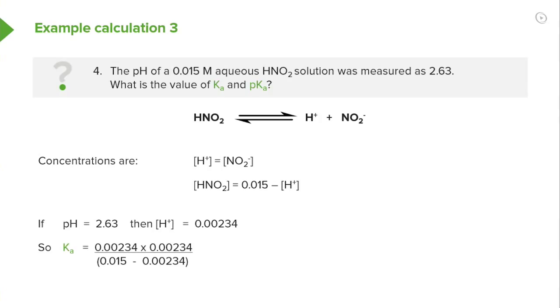If the pH that we are measuring of this solution results in a concentration as we can see here of 0.00234 molar, it enables us to substitute those values into the equation to determine Ka.